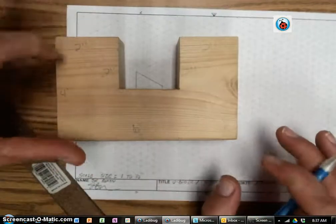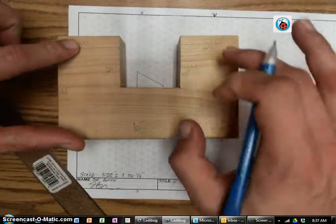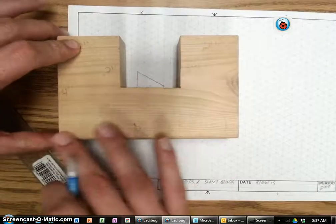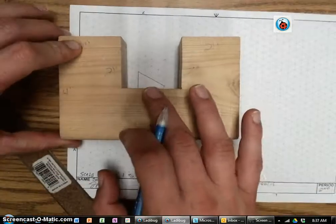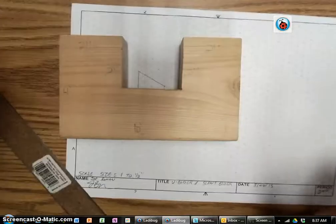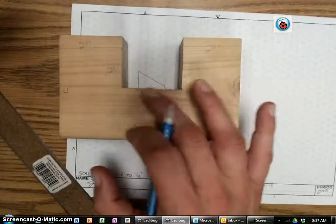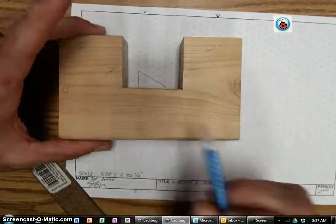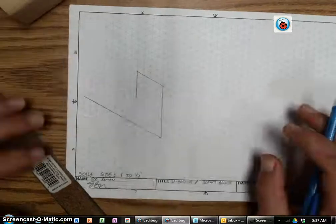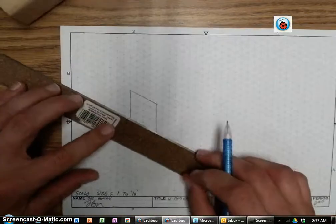Now I need to know the size of this line. Well, if this is 2 inches, and this is 2 inches, and my overall is 6, what does this have to be if those are both 2 inches? It has to be 2 inches across there. So 2 inches is 4 blocks.